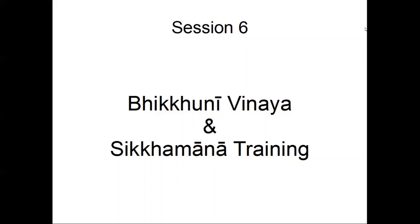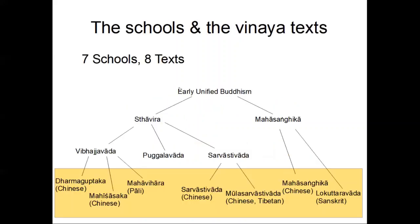Today is session six about Bhikkhuni Vinaya and Sikamana training. When we talk about Bhikkhuni Vinaya, we're not only talking about the Pali school — we are talking about all the material preserved in all the schools. For the Bhikkhuni Vinaya we have materials from seven schools, and altogether we have eight texts because one school, the Mula Sarvastivada, has the text preserved in both Chinese and Tibetan.